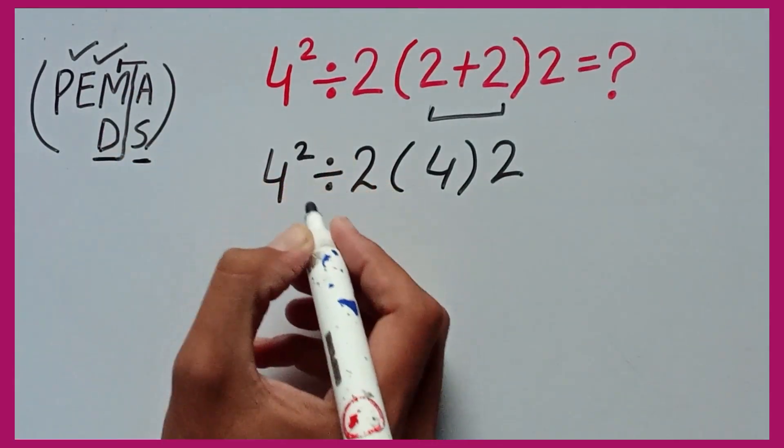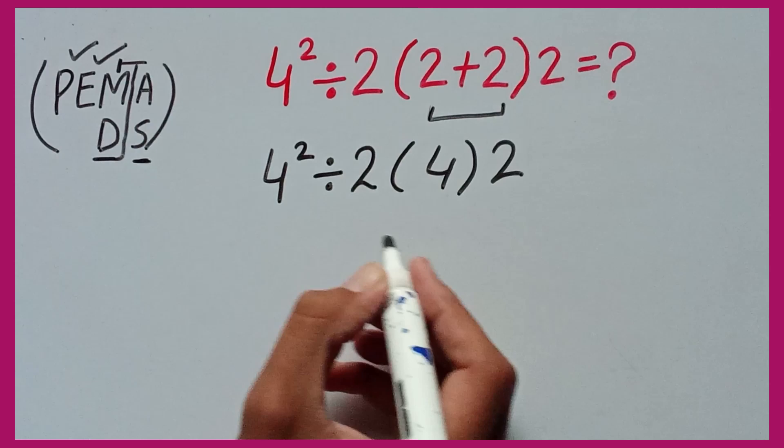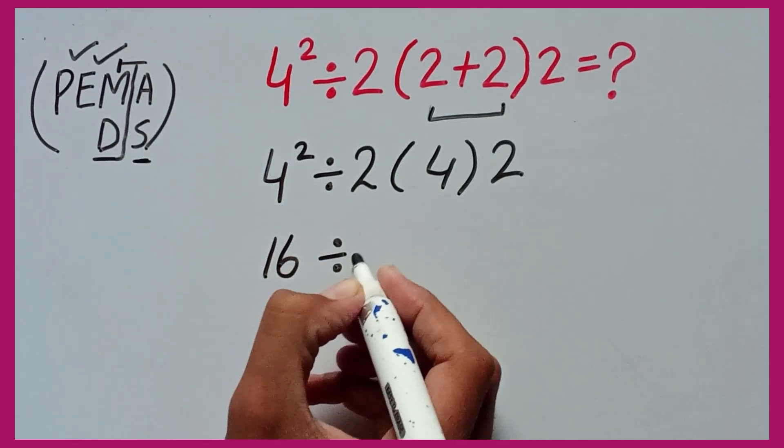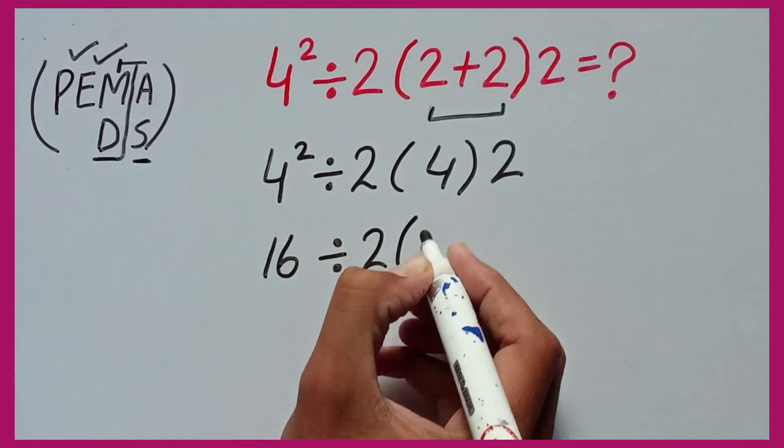Parentheses have higher priority than other operations, so 4 times 4 equals 16 divided by 2 times 4 times 2.